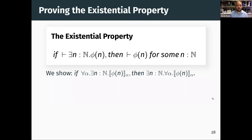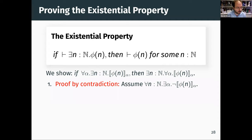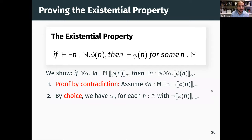We do this proof by contradiction using classical reasoning. We assume the negation of the conclusion: for all N, there exists an ordinal α such that φ(N, α) does not hold. By the axiom of choice, we pick an α_N for each natural number N such that φ(N, α_N) does not hold.